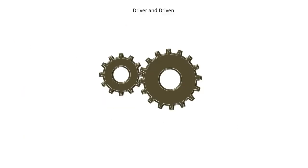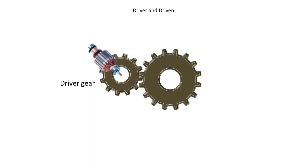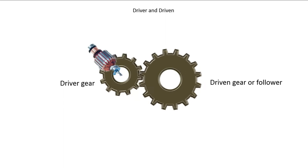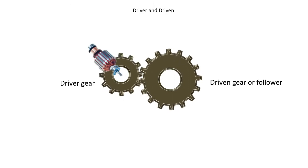When a gear is connected to a power source — like an electric motor, a car engine, or even the muscle power of a human — it is called the driver gear. The other gear that is being driven is the driven gear. Another term is the follower, since it follows the driver. I believe follower may be the British term.